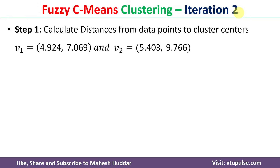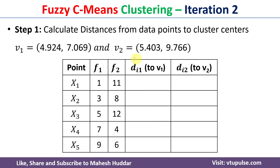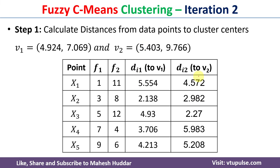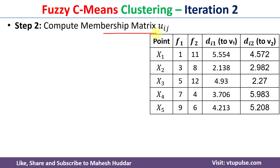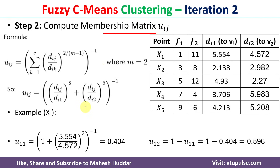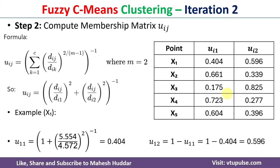In the second iteration, we again find the distance from each data point to the updated cluster centers v1=(4.924, 7.069) and v2=(5.403, 9.766). Using the same distance formula, we compute all distances. Then for x1, u11 = [1 + (d11/d12)²]^(-1) = [1 + (5.554/4.572)²]^(-1) = 0.404, and u12 = 1 - 0.404 = 0.596.